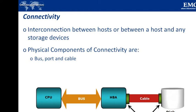Next is port. A port is a specialized outlet that enables connectivity between the host and external devices. An HBA may contain one or more ports to connect the host to other storage devices. Next is the cable. A cable connects the host to internal or external devices using copper or fiber optic media.